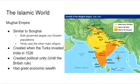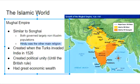The Mughal Empire, located in modern day India, is similar to the Songhai Empire in that they both governed largely non-Muslim populations. A large Hindu population existed in the region. This empire was created by the Turks after they invaded India in 1526, and it saw rapid growth. They had political unity despite people of different religions and backgrounds, until the British took over. India is known for spices and trade, connecting to the Middle East, Asia, and Europe, bringing great economic wealth.